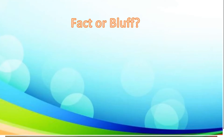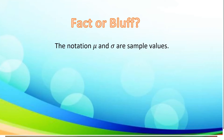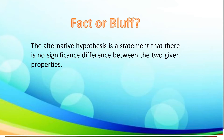Let's have the first activity entitled Fact or Bluff. The first statement: the notation mu and sigma are sample values. It is a bluff. Next statement: the alternative hypothesis is a statement there is no significant difference between the two given properties. That is also a bluff.